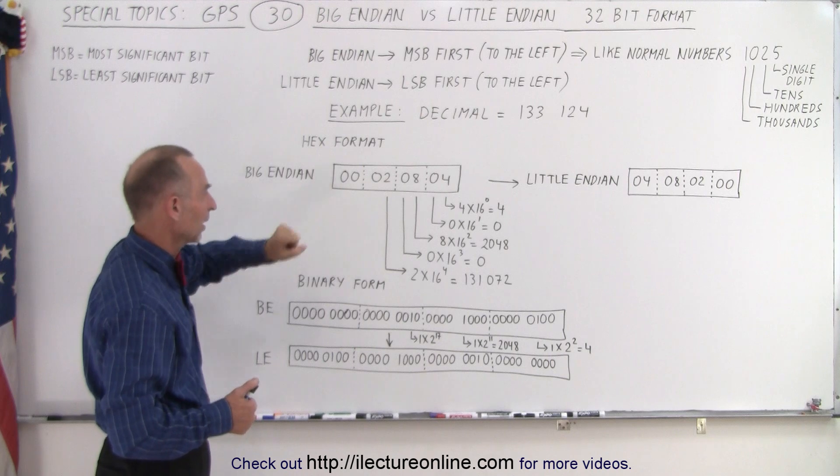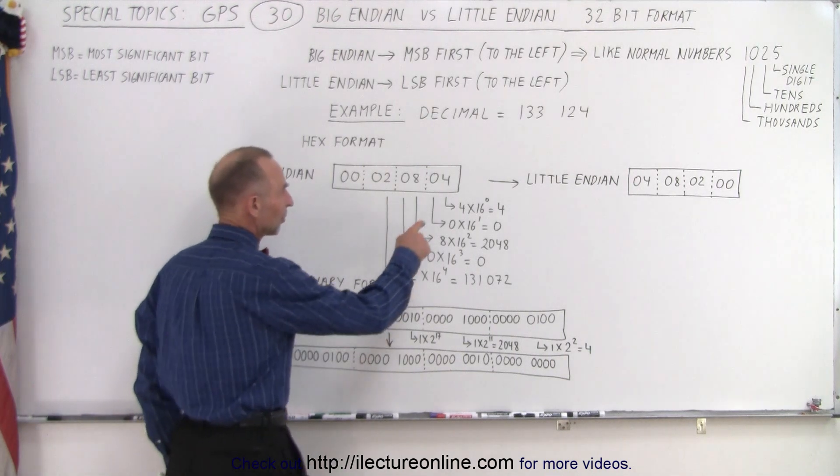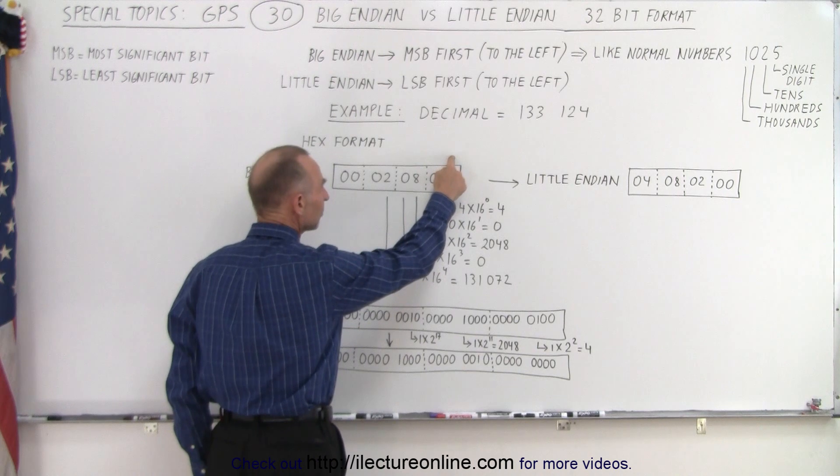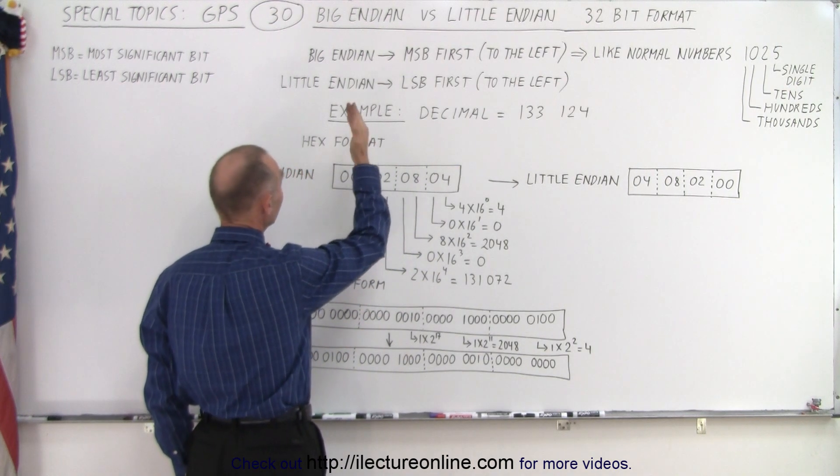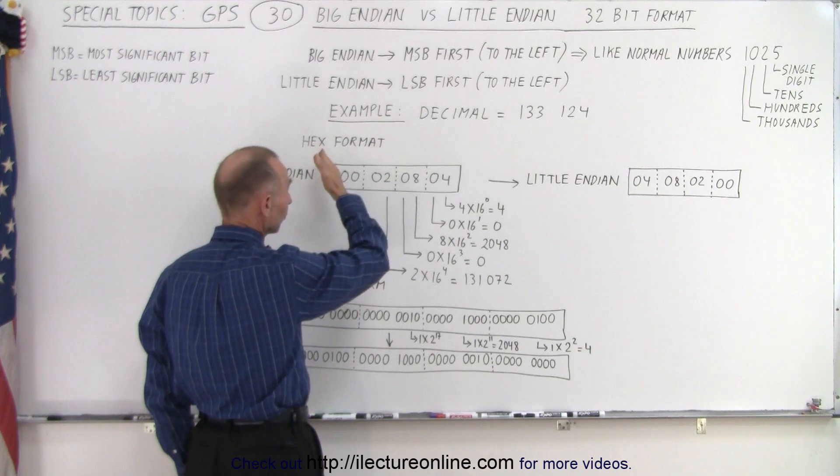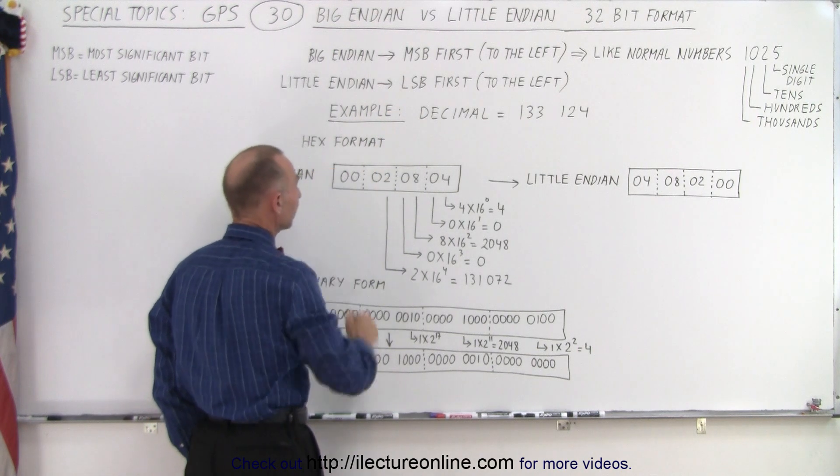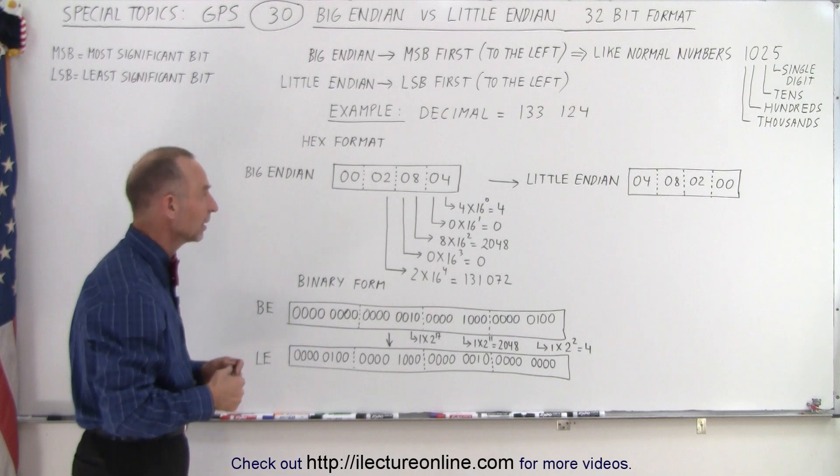Well in hex this is what the number looks like and notice that the first digit to the right here, that is the least significant bit and the first digit on the left, that's the most significant bit by definition. Most significant bit is first to the left and that's called Big Endian and in GPS that's how we have the data.